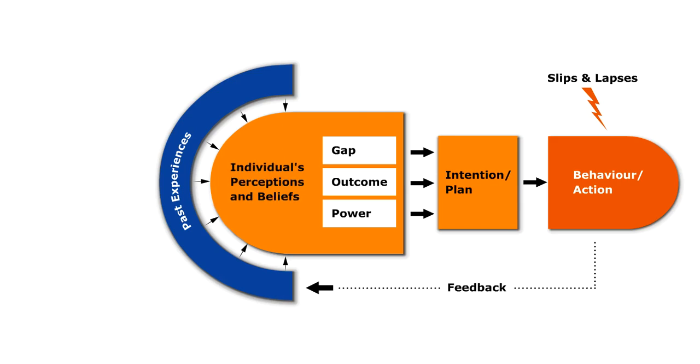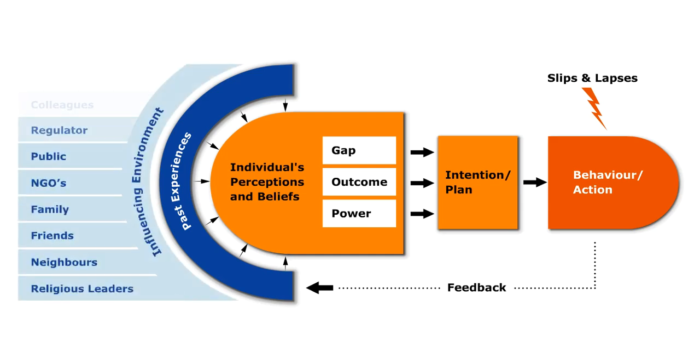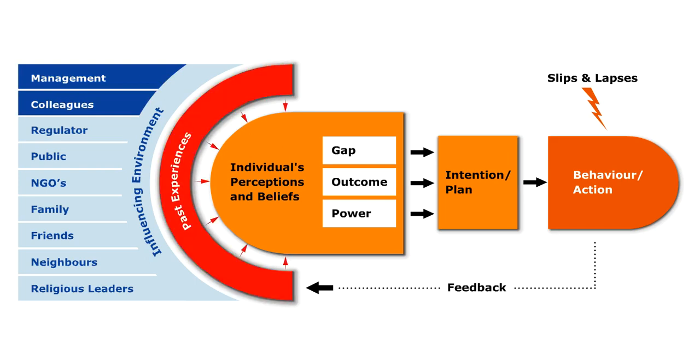Because people are basically social animals, our past experiences and our contacts with people around us have a major influence on the way we act just now. A wide range of people, such as our family and friends, make up the influencing environment, which through our past experiences affects our beliefs and perceptions, and hence how we act.